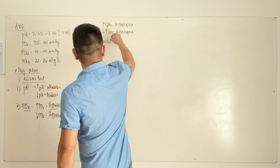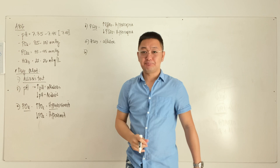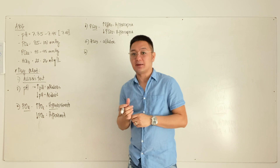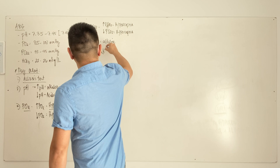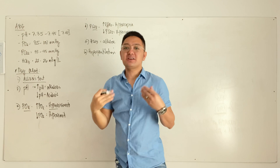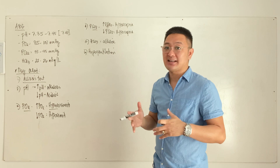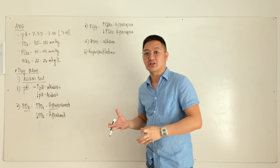Bicarbonate is part of the buffer system and is alkaline in nature — it neutralizes acidity. Now let's discuss the effects of hyperventilation, hypoventilation, vomiting, and diarrhea on ABG. Starting with hyperventilation: when a patient hyperventilates — due to anxiety, pain, fever, CNS infections, or ingestion of toxic substances — that increases carbon dioxide loss.